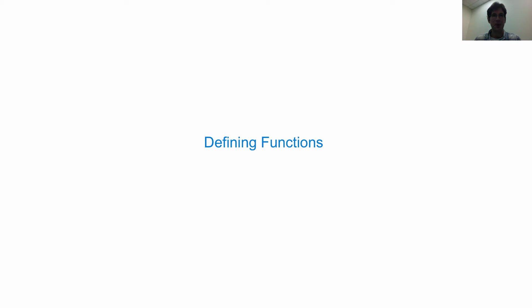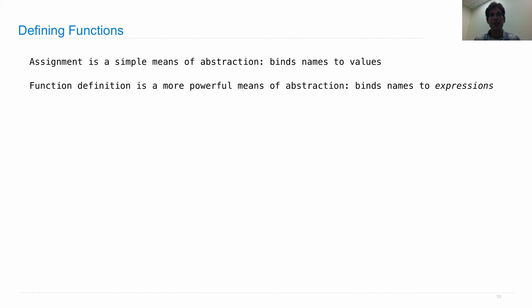Defining functions is one of the most important things you will do in this class. This course is all about abstraction, and today we're learning tools for abstraction. Assignment is a simple means of abstraction because you can bind names to values. Abstraction is the process of taking something complex, giving it a name, and treating it as a whole without worrying about all of its details. Function definition is a more powerful means of abstraction because you'll be binding a name not just to a simple value, but to a whole expression or series of statements — something that truly is complex — and treating it as a whole.